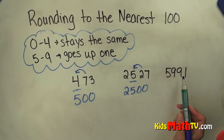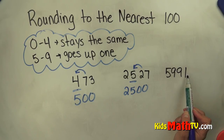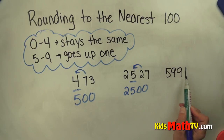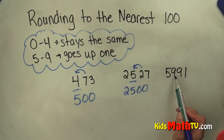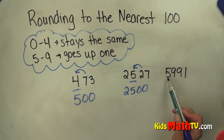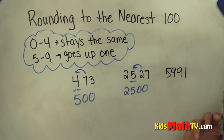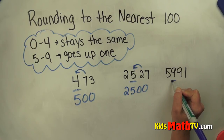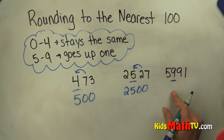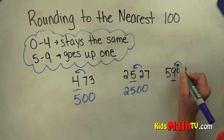Let's try a tricky one. This is five thousand nine hundred ninety-one. Is this number closer to five thousand nine hundred, or is it closer to six thousand? I'm going to do the same thing — underline the hundreds place, that's where we're rounding to, and the number to the right tells that number what to do.